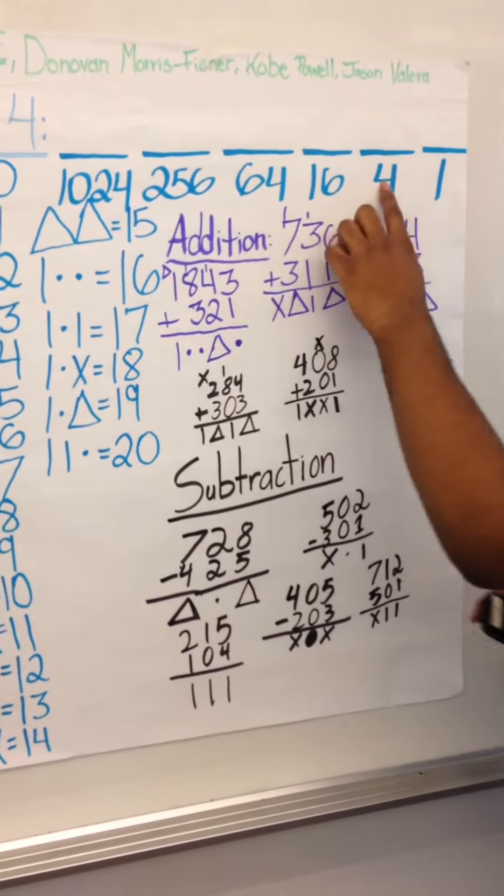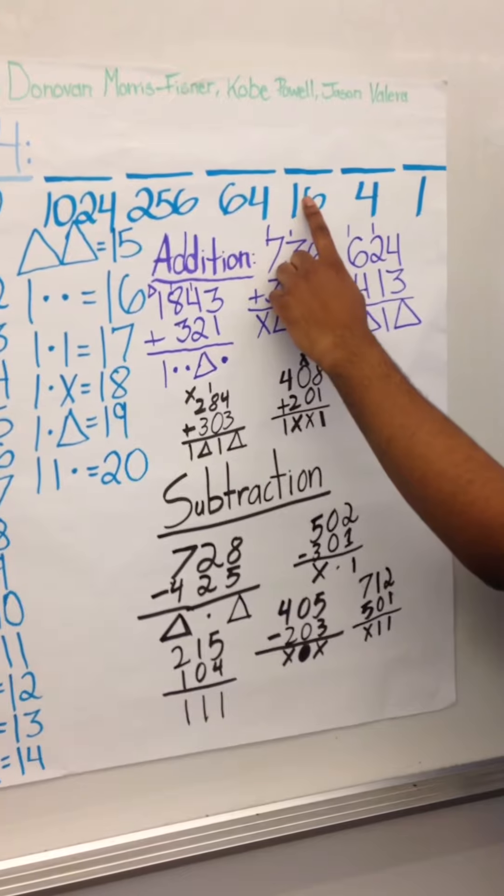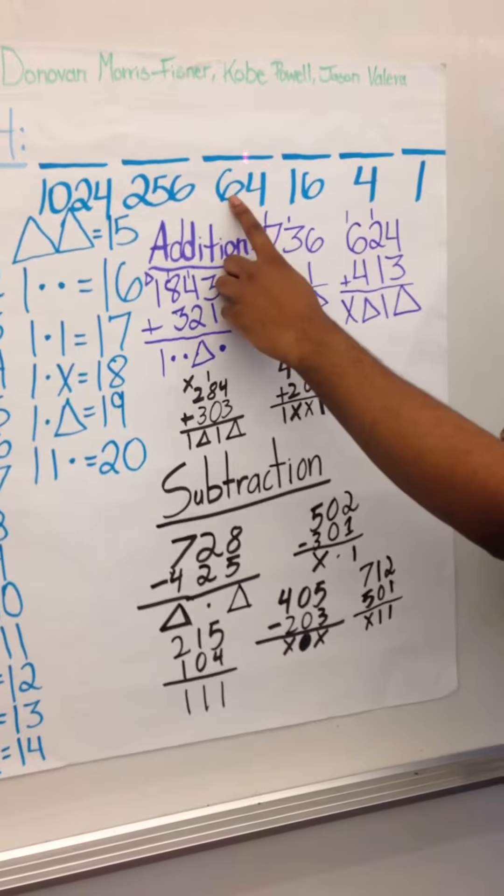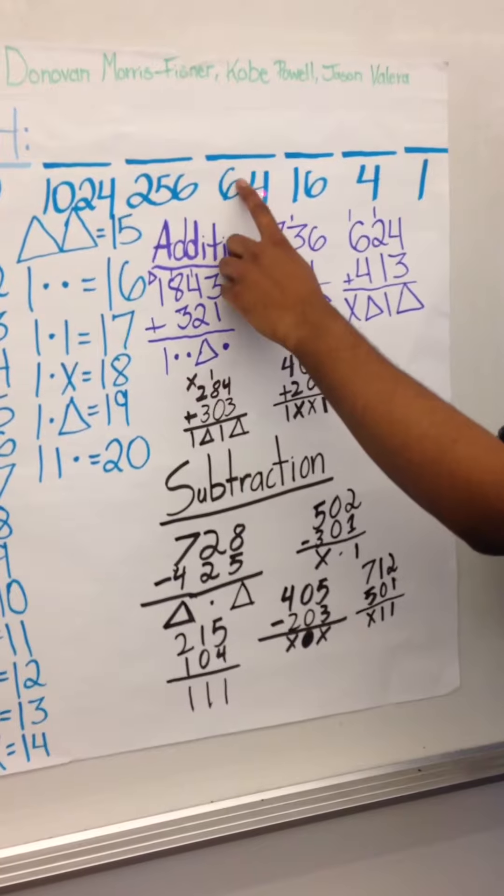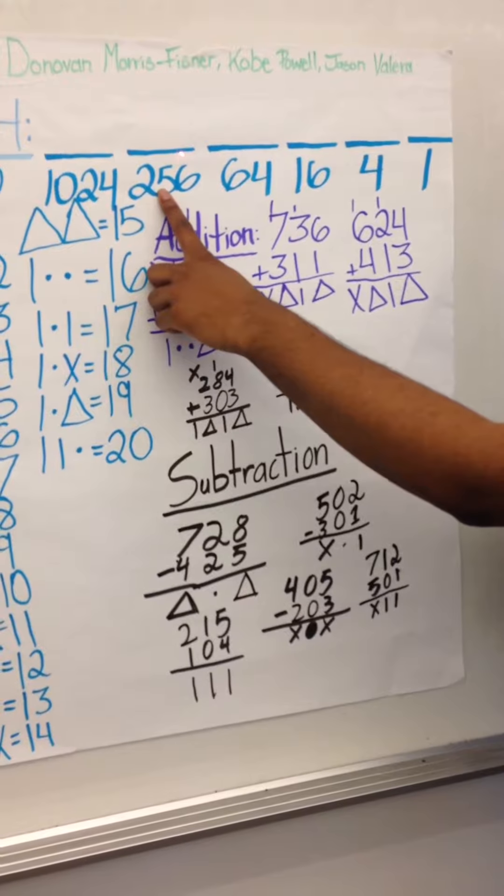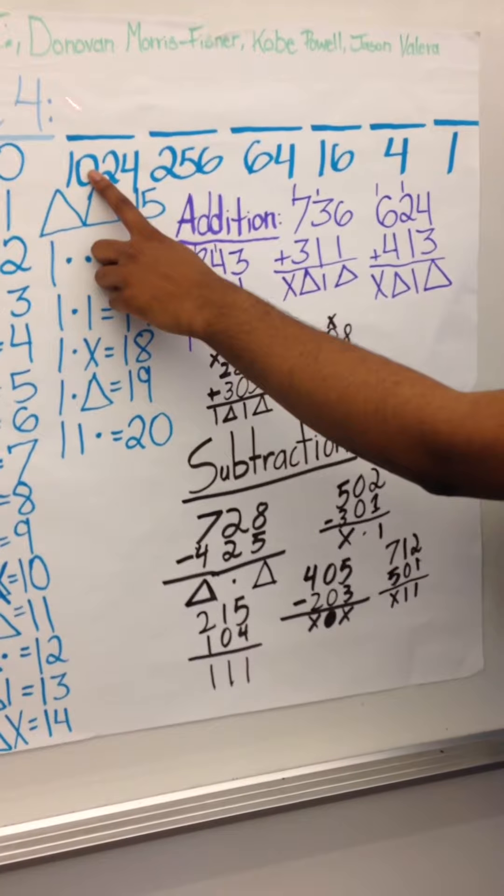Then this one is four because our base is four, then four times four is sixteen, then four times sixteen is sixty-four, then four times sixty-four is two fifty-six, then four times two fifty-six is ten twenty-four.